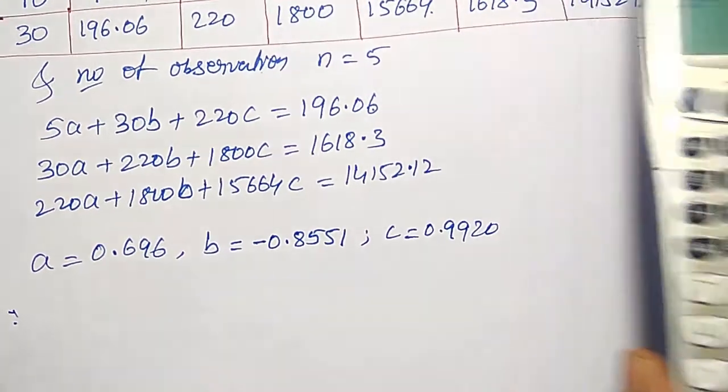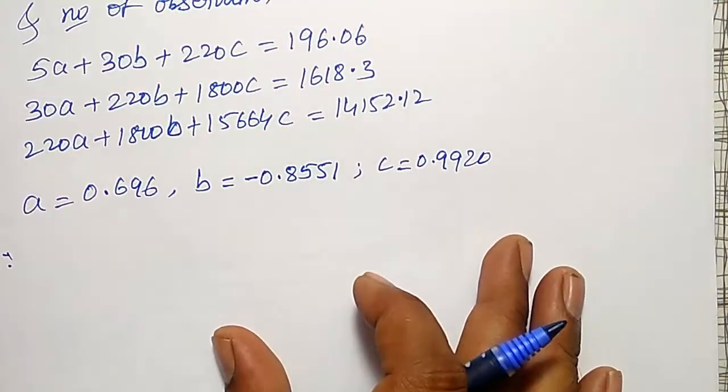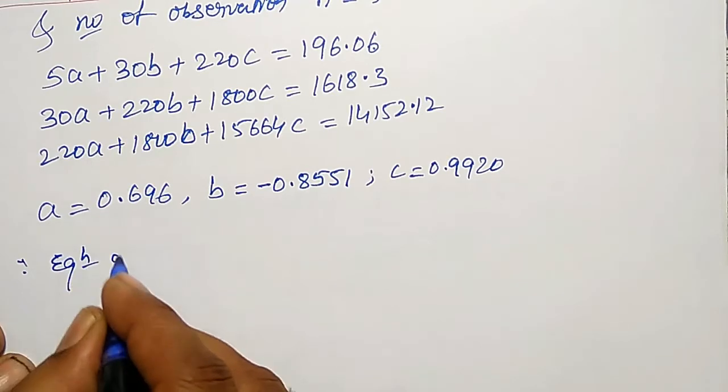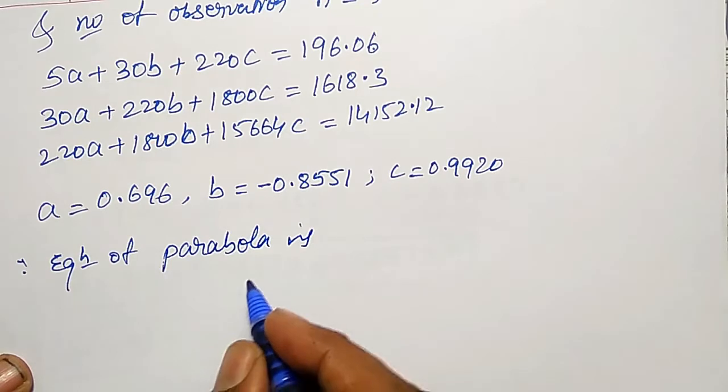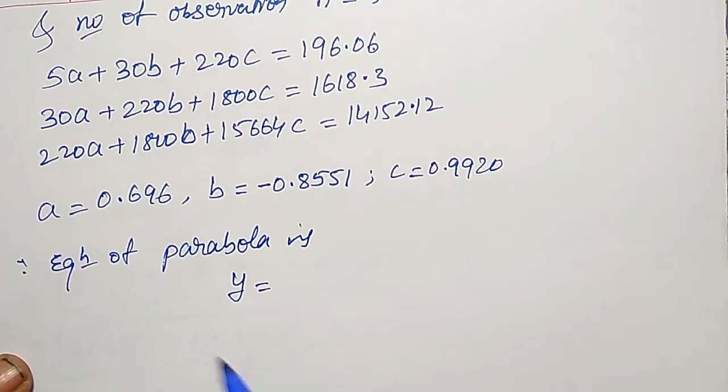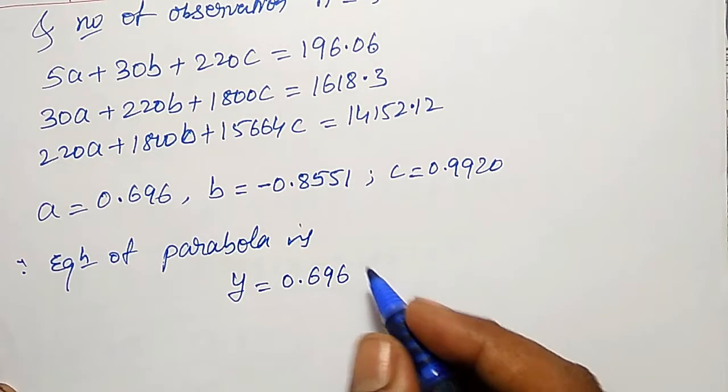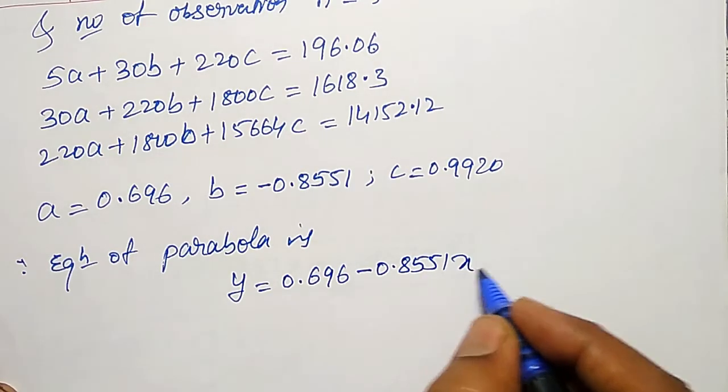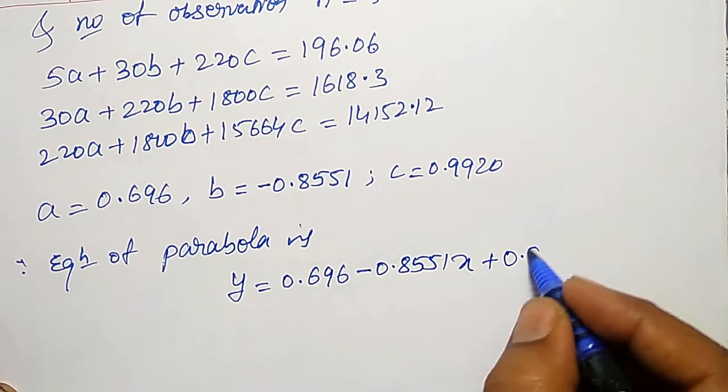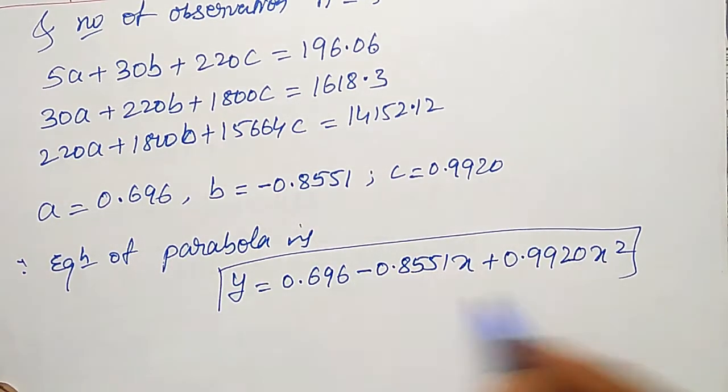Therefore, equation of parabola is y equal to a, a value is 0.696 plus bx, b is minus 0.8551 into x plus cx square, c value is 0.9920x square. This is the required equation of parabola. And you can verify your answer.